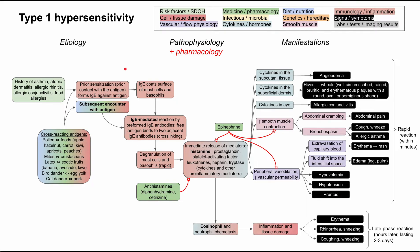This is a mechanism of disease map for type 1 hypersensitivity, or allergic reactions. I'll be talking about the etiology of allergic reactions, as well as the pathophysiology and the manifestations, and I'll throw in a couple notes on the pharmacology used to treat allergic reactions. Each of these bubbles is color-coded according to the legend, and I'll be talking through each one by one.